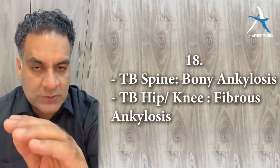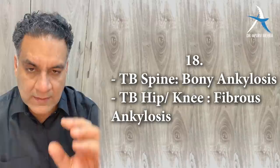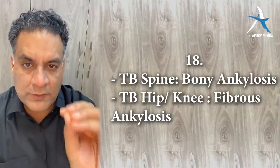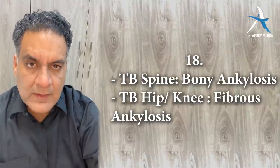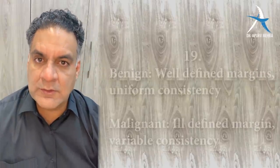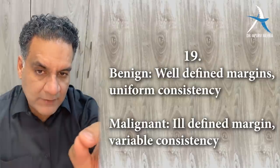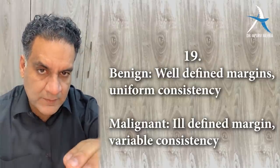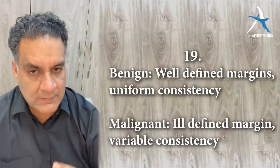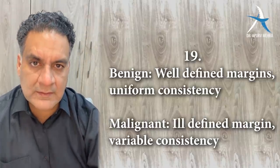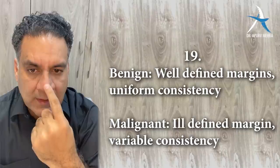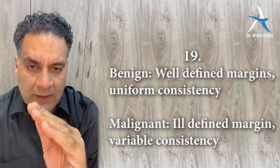Point number nineteen: a benign tumor has a well-defined margin, delineated from normal tissue, with uniform consistency on palpation. A malignant tumor has ill-defined margins and variable consistency — somewhere hard like bone, somewhere firm like cartilage, somewhere soft. Point number twenty: single central cavity — unicameral bone cyst with fallen leaf sign. Multiloculated eccentric — aneurysmal bone cyst. Night pain relieved by salicylates — osteoid osteoma.